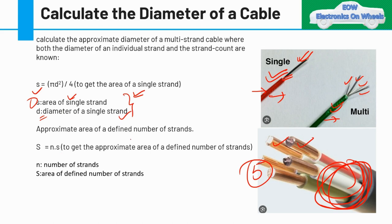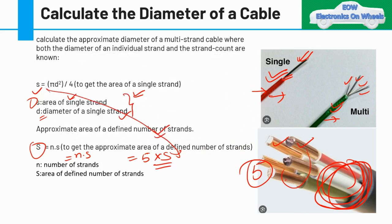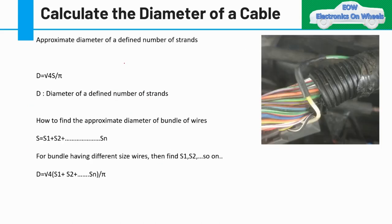Now if you have multiple strands, the approximate area of the bundle is n × s, where n is the number of strands and s is the area of a single strand. For example, if you have five strands, it's 5 × s. To find the diameter of the bundle, the formula is: D = √(4S / π), where S is the total area of the defined number of strands.